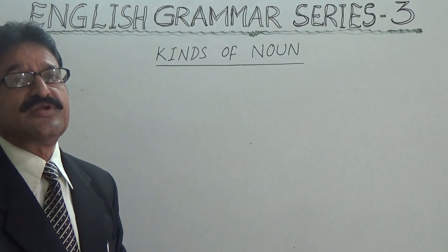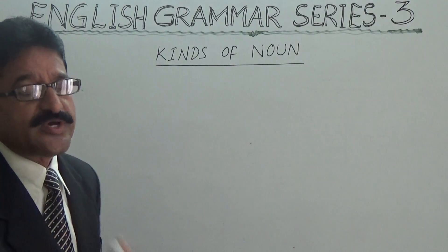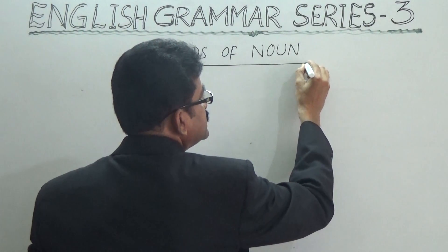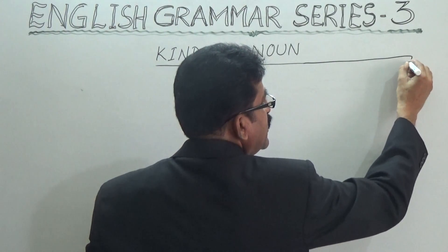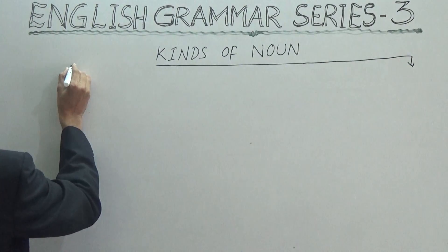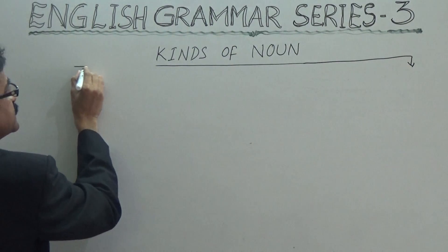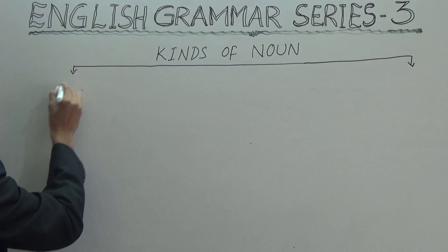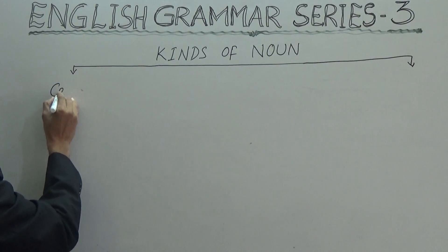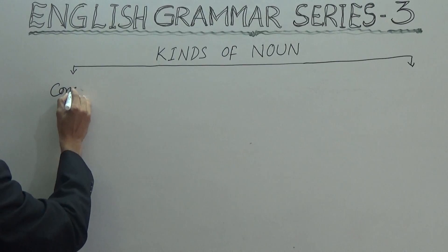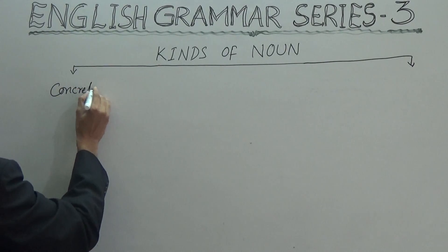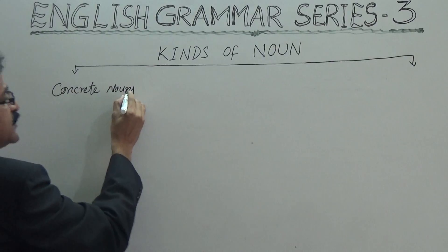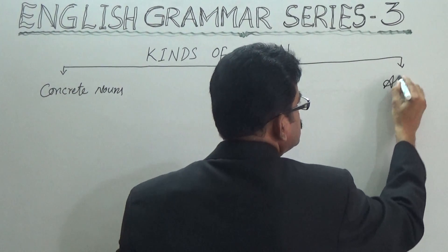Here in detail, what are the different kinds of nouns — that is what we are going to discuss. Basically, nouns are divided into two kinds: concrete nouns and abstract nouns.